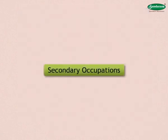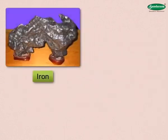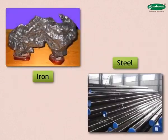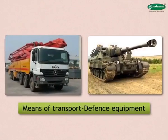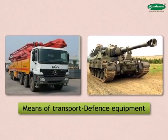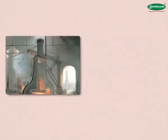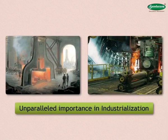Let us study a few secondary occupations in detail. Iron and steel industry. Iron and steel are required for the production of machinery for various industries, means of transport, defence equipment, etc. Hence, iron and steel industry has unparalleled importance in industrialisation.